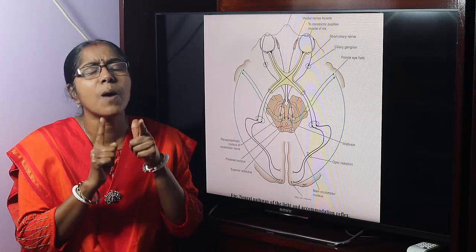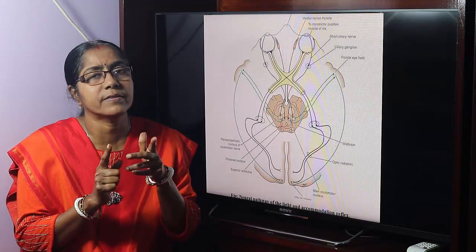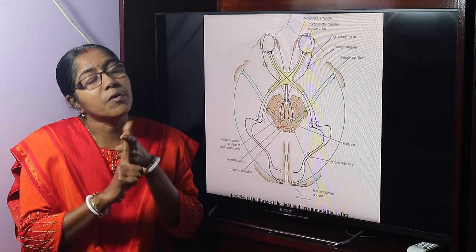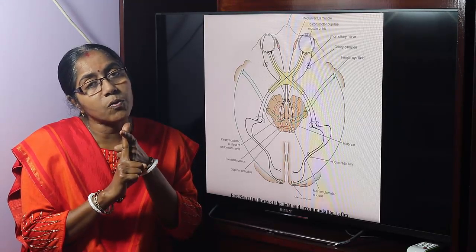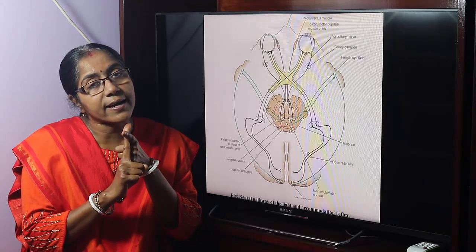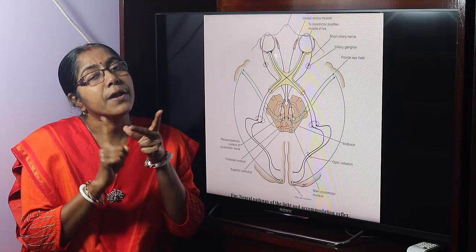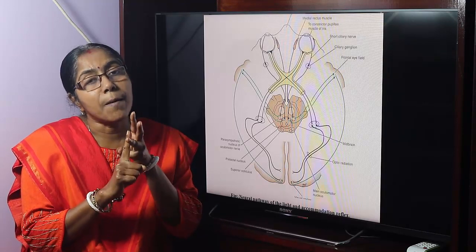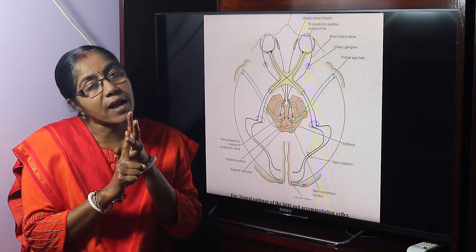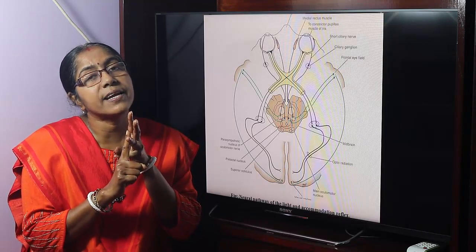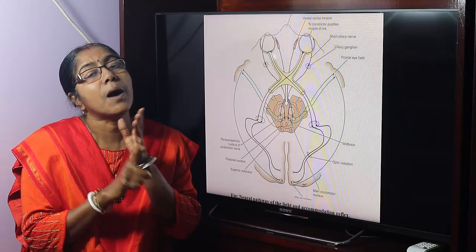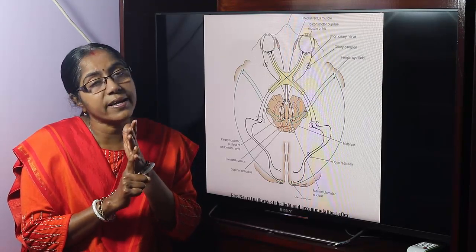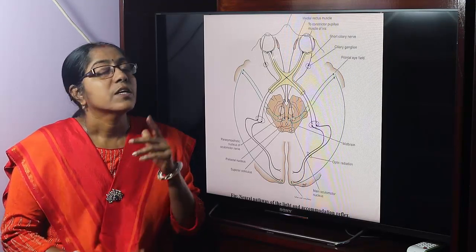There are four component parts. Number one: convergence of the ocular axis. Number two: constriction of the pupil. Number three: contraction of the ciliary muscle. And number four: increased curvature of the lens.